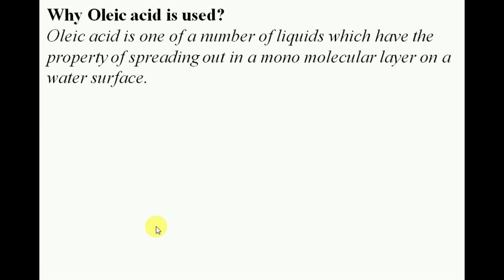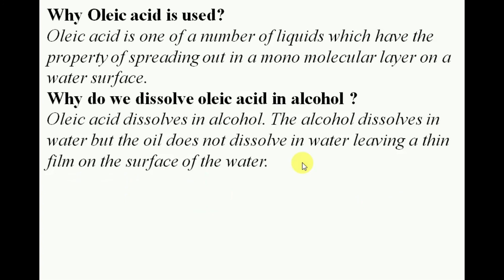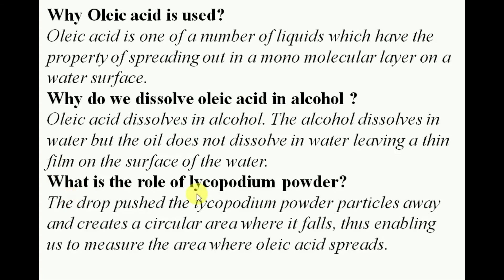Why do we use oleic acid? Because oleic acid has the ability to form a monomolecular layer. Other oils may form a film of more than one molecular thickness, so we specifically use oleic acid. We dissolve oleic acid in alcohol so that we can get a very thin layer — using a large amount of oleic acid directly would not give a molecular-thick film. The role of lycopodium powder is to make the film visible so we can measure its area.